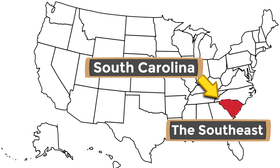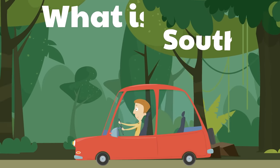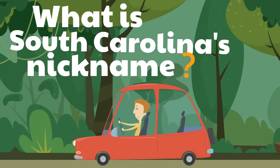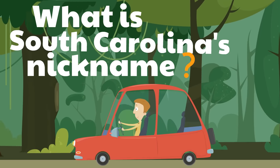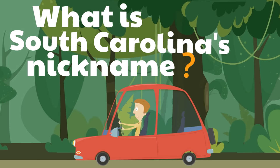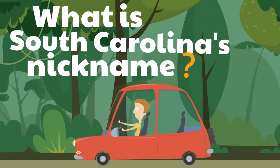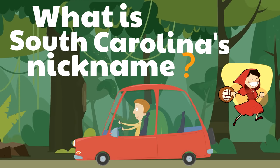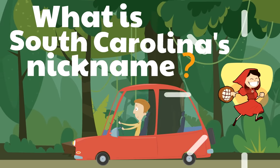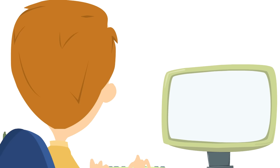To review, South Carolina is right here on the United States map — it's in a region called the Southeast, and it borders the Atlantic Ocean. Did you notice that South Carolina almost looks like a heart? It's just like a little heart in the southeast. All right, let's move on: what is South Carolina's nickname?